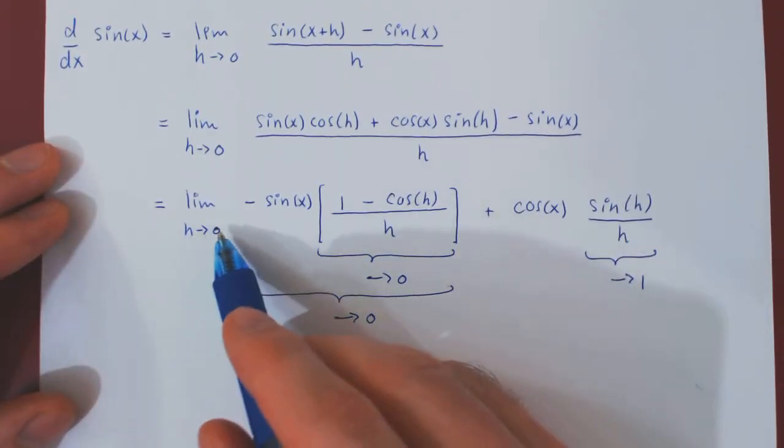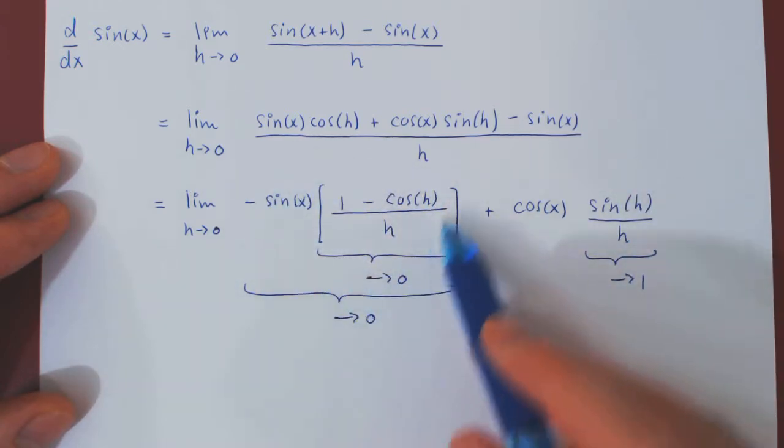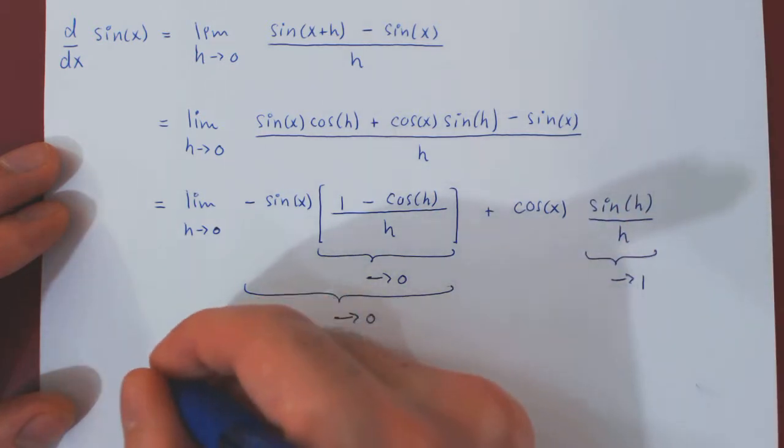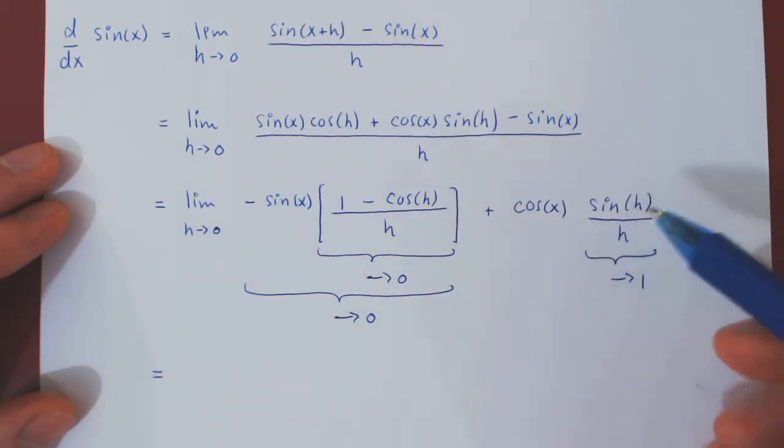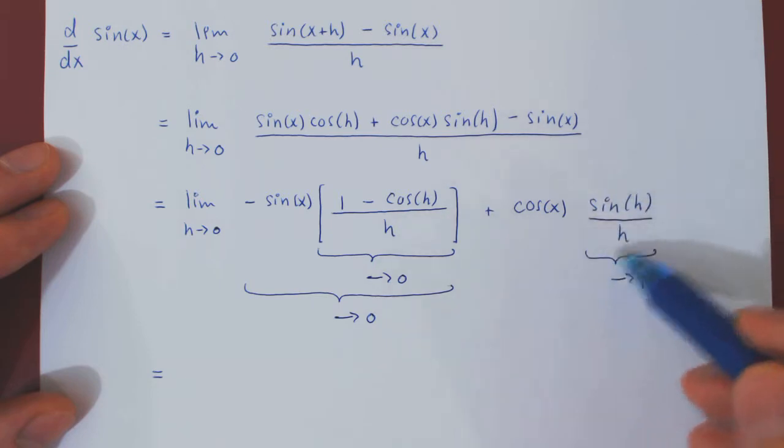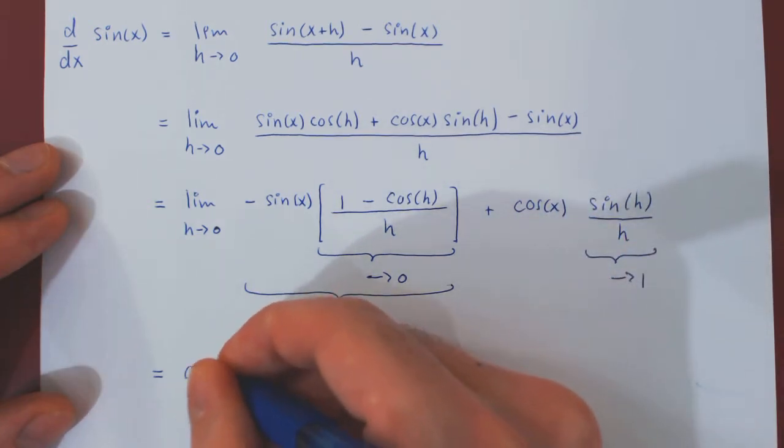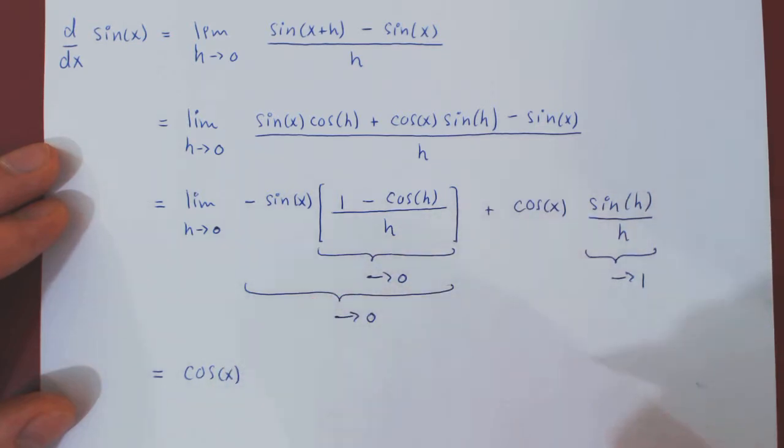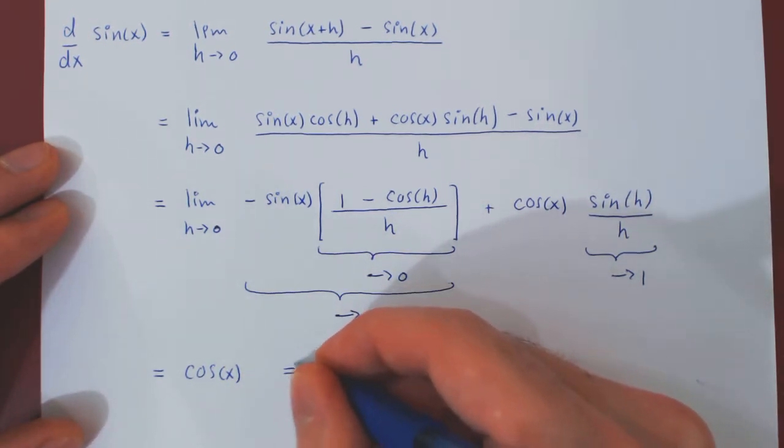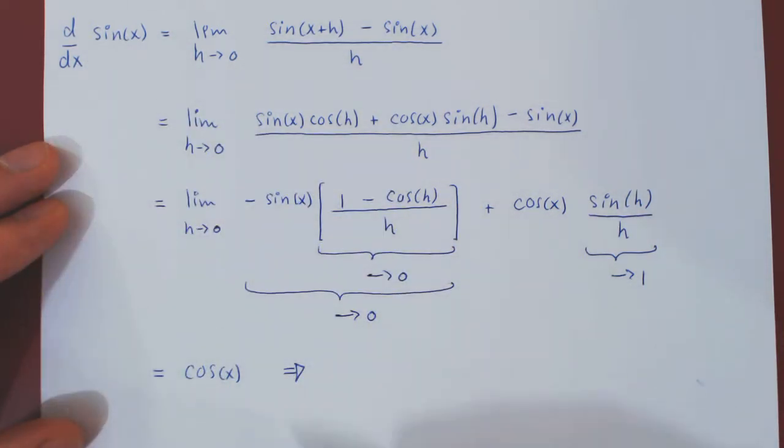As h approaches 0, we are considering the sum of two terms. The first shrinks to 0, so it just goes away, it vanishes. The second is made up of cos of x times sin of h over h, but as h goes to 0, sin of h over h gets closer and closer to 1. So, this will be in the limit, 1 times cos of x, which is simply cos of x. And we're done. So, we have a very interesting result. The derivative of sin of x is simply cos of x.